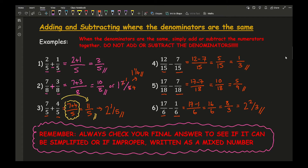Going back to question 2, if I had simplified 10 over 8 to 5 over 4 first, then converted to a mixed number — how many 4s go into 5? That's 1 remainder 1, giving 1 and a quarter. Simplifying early does make life a bit easier, particularly after you've done the adding or subtracting with the numerators.